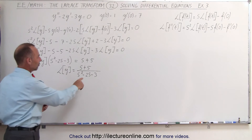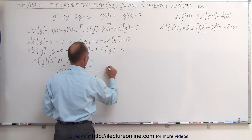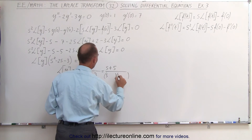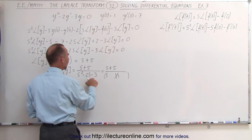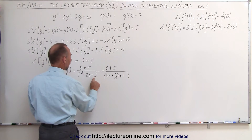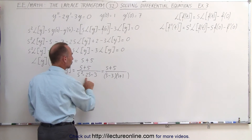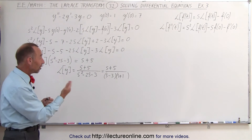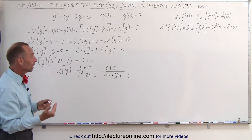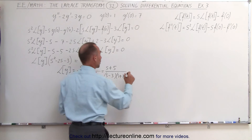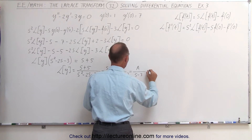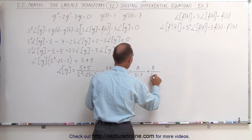Before we do that, let's factor this. So this can be written as s plus 5 divided by — we have an s and an s, we need minus 3 and plus 1. Minus 3 plus 1 equals minus 2, and multiplying gives minus 3, so that's correct. But now we have to put this into a format so we can take the inverse transform, and one of the methods to do that would be to use partial fractions. So this can be written as a over s minus 3, plus b over s plus 1. All we have to do now is determine what a and b are equal to.